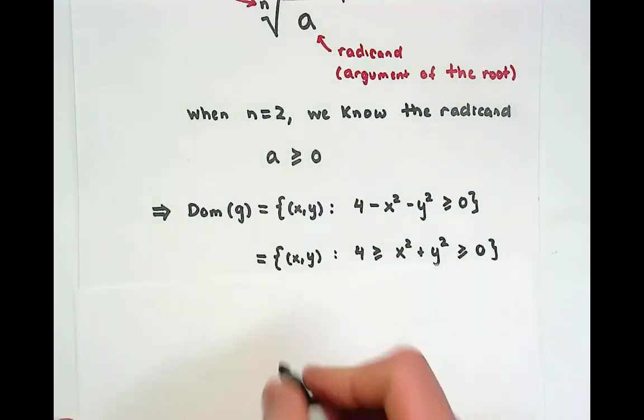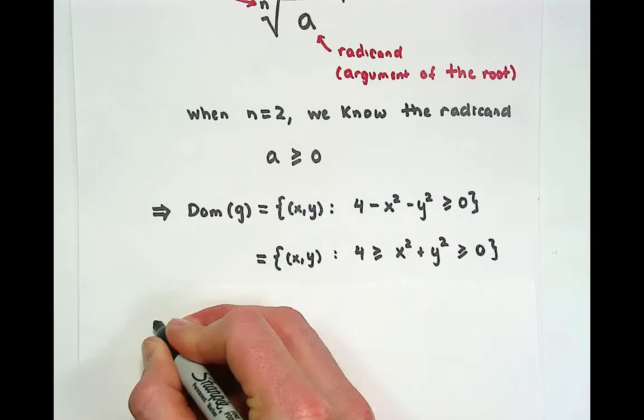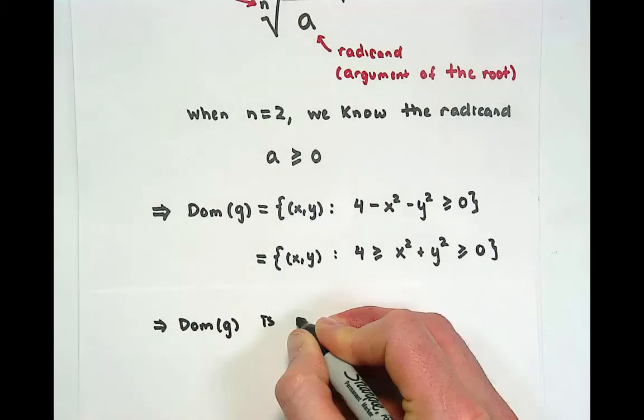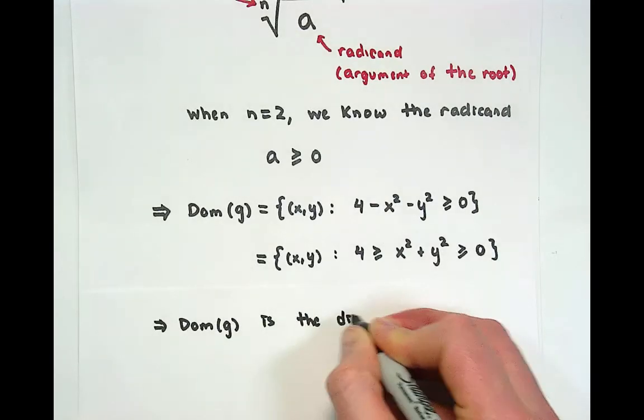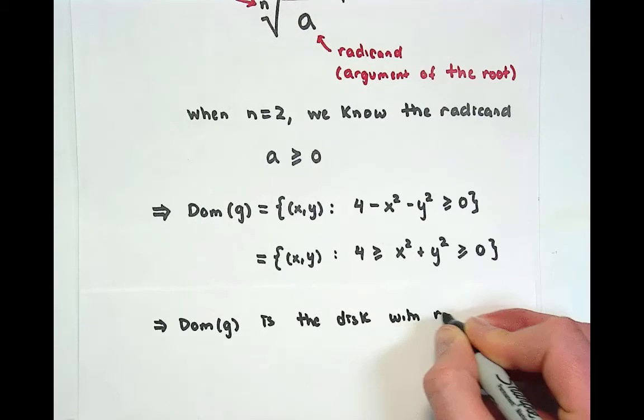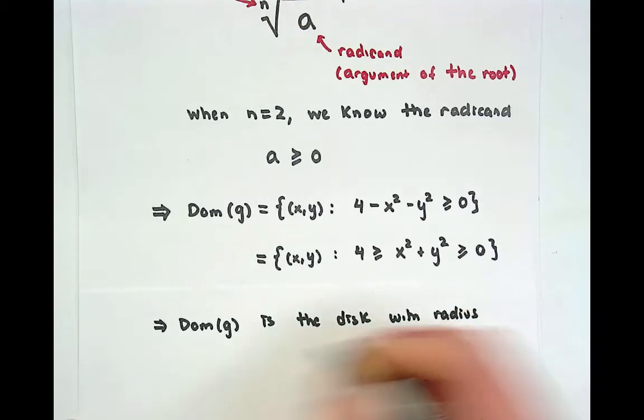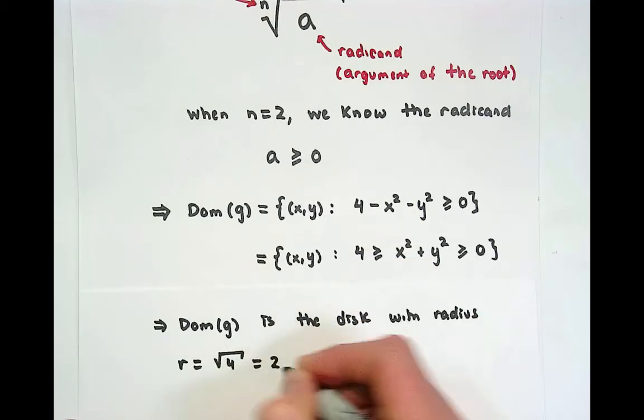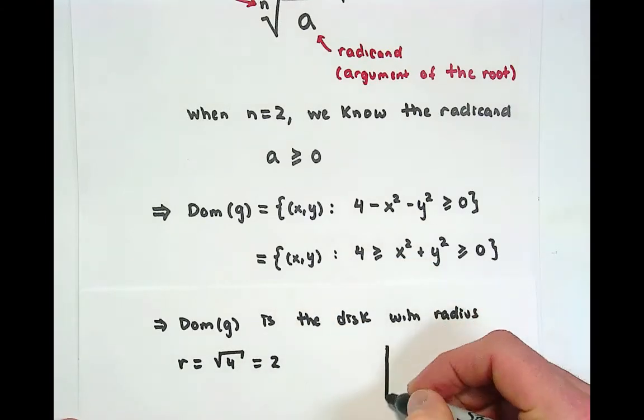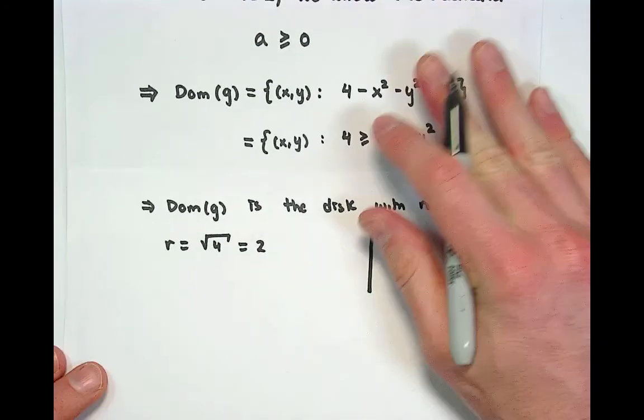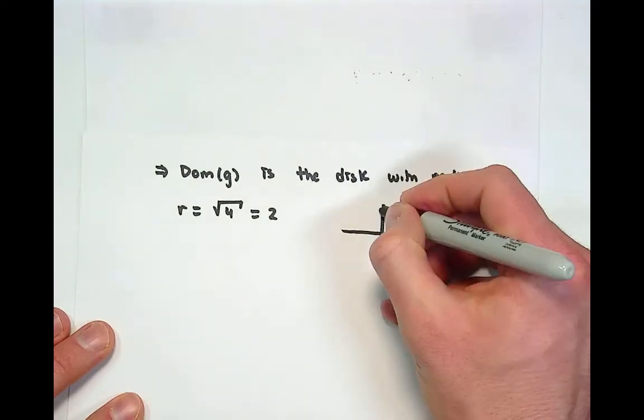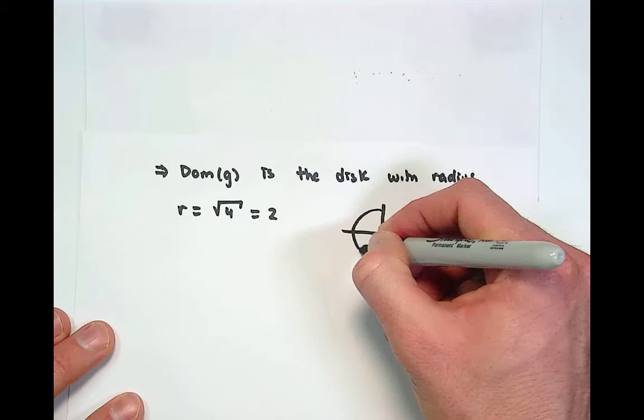If we were to graph this, this means that the domain of our function g is the disk with radius r equal to the square root of 4, because of the way that circles work. You could do a quick graph of this by hand, much better to do with Mathematica. I agree with you audience members at home.